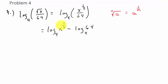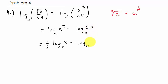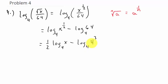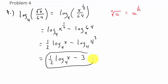Now we take the exponent and bring it down in front: one-half log X base four minus log base four of 64. Can 64 be rewritten as four raised to a power? Yes — four times four times four is 64, so 64 is four cubed. Since the bases match, our answer is the exponent, giving us one-half log X base four minus three.